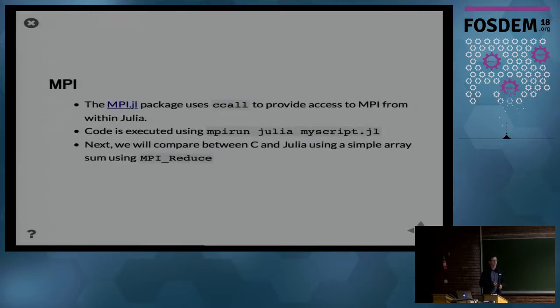Next is the integration of MPI. Using this ccall primitive where we can call C functions, we can of course also call the MPI C functions. Then if we write a Julia program using these wrapped MPI functions, we can just run this using mpirun Julia and then the script that we created. We will compare a bit between C and Julia using a simple MPI reduce.